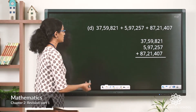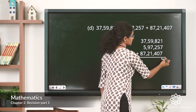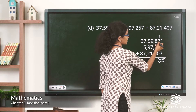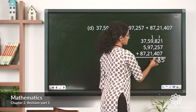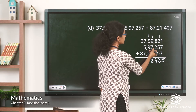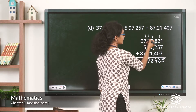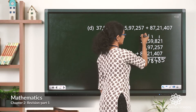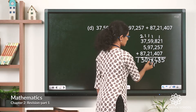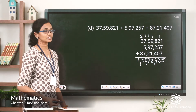Now question D — here we have 3 addends. Let's do the addition: 7 plus 7 is 14, plus 1 is 15, carryover 1. 0 plus 5 is 5, plus 2 is 7, plus 1 is 8. 4 plus 2 is 6, plus 8 is 14, carryover 1. 1 plus 7 is 8, plus 9 is 17, plus 1 is 17, carryover 1. 7 plus 5 is 12, plus 7 is 19, plus 1 is 20, carryover 2. 8 plus 3 is 11, plus 2 is 13. Inserting commas, the sum is 1 crore 30,78,485.